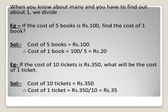Another example: if the cost of 10 tickets is rupees 350, what will be the cost of one ticket? The solution is: since the cost of 10 tickets is equal to rupees 350, therefore the cost of one ticket is 350 divided by 10, that is rupees 35.